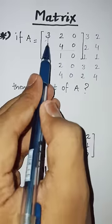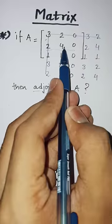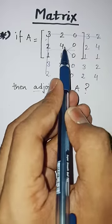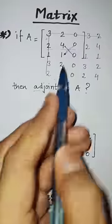You will cancel the first row and first column. Then you will multiply it again. Then you will get 4 into 0, which is 0.